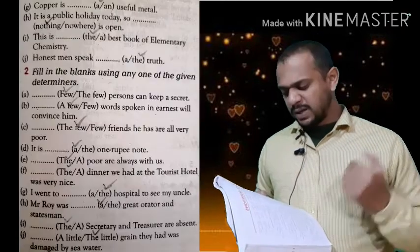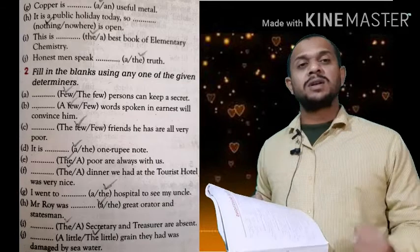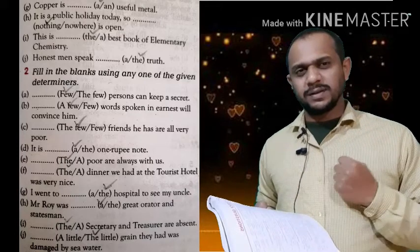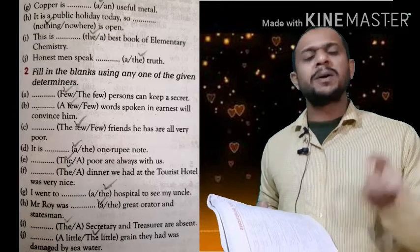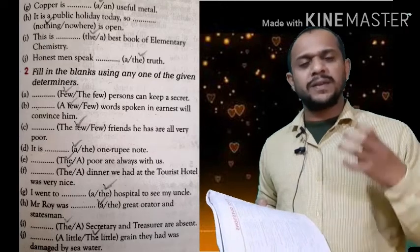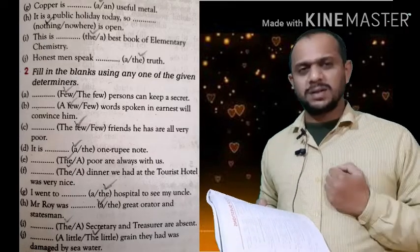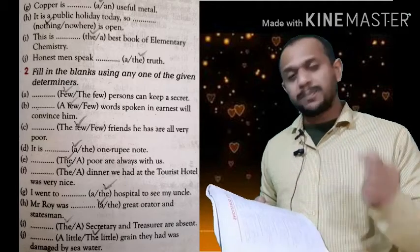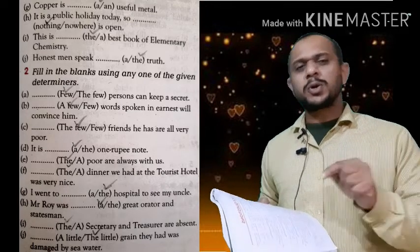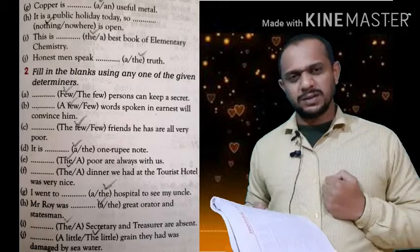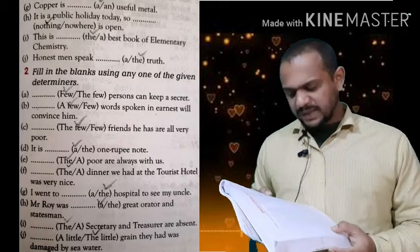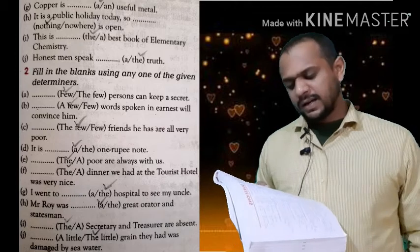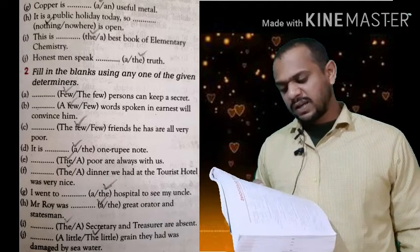Exercise: 'Honest man speaks dash truth' — a or the? Truth is universal, so we keep the definite article before things that are universal. We keep 'the' before truth because truth is universal: 'the truth.'